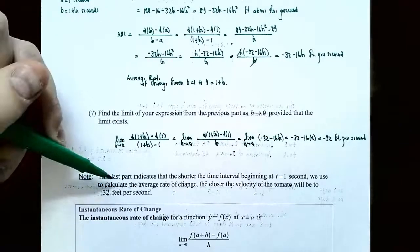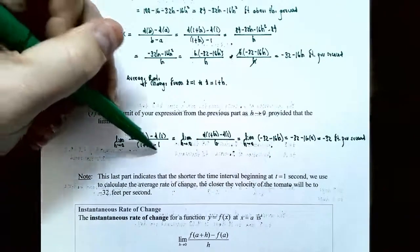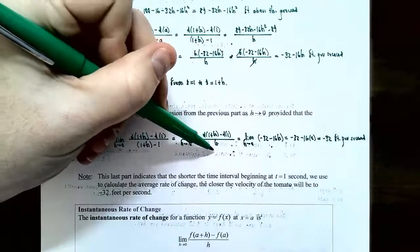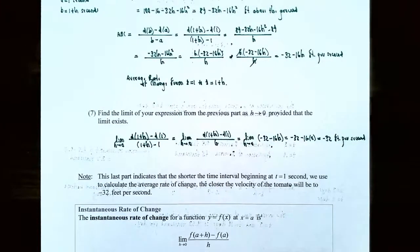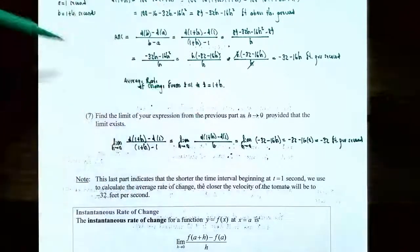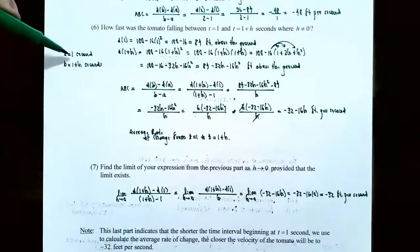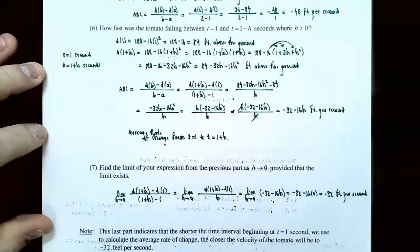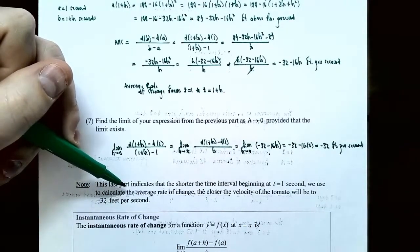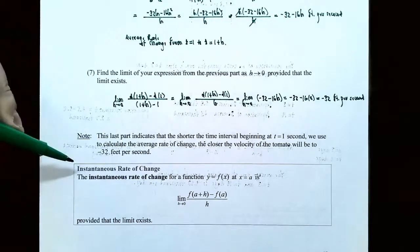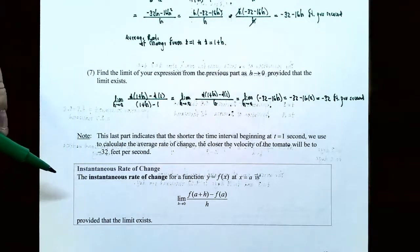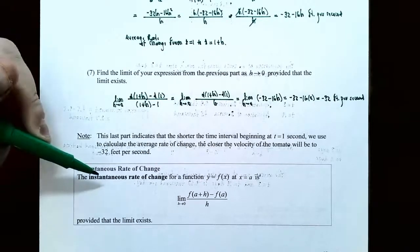In this last part, h represented the difference between the times — one plus h was the ending time, subtract one the starting time, giving just h. This h represents shorter and shorter time intervals beginning at t equals one second. As h approaches zero, we're getting closer to just one second, and the average rate of change approaches negative 32 feet per second. This is called instantaneous rate of change.